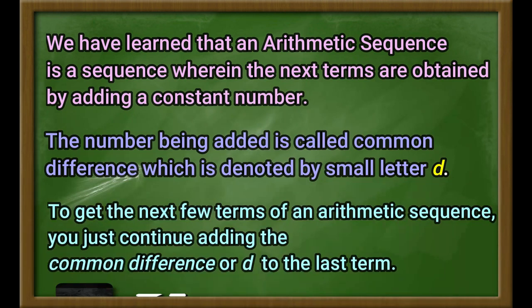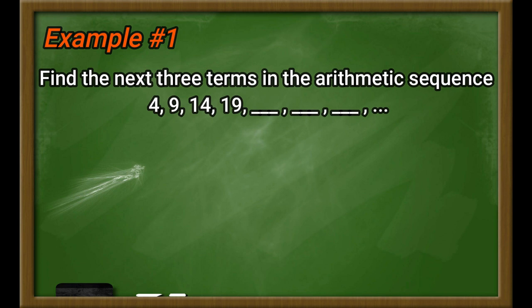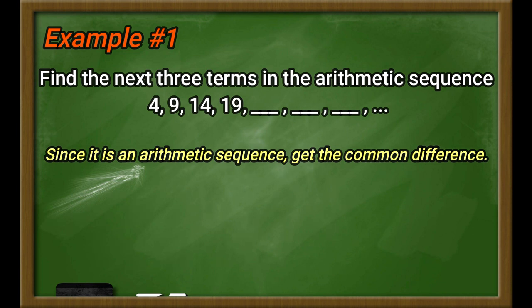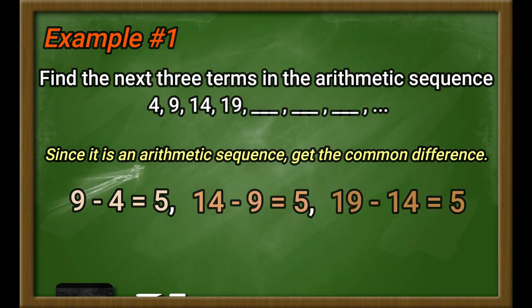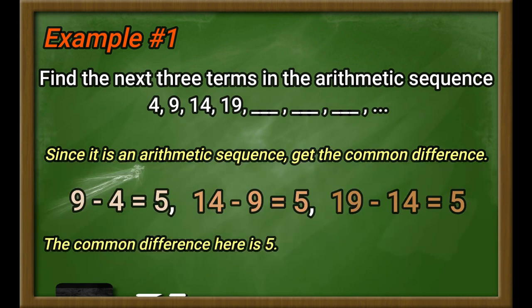To get the next few terms of an arithmetic sequence, you just continue adding the common difference or d to the last term. Example number 1: Find the next 3 terms in the arithmetic sequence 4, 9, 14, 19. Since it is an arithmetic sequence, get the common difference. 9 minus 4 equals 5. 14 minus 9 equals 5. 19 minus 14 equals 5. Therefore, the common difference here is 5.